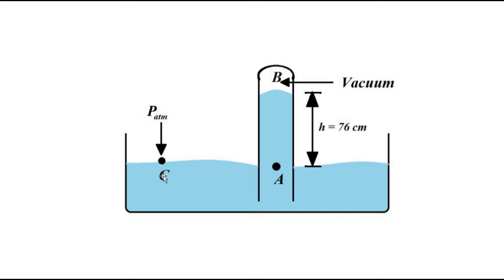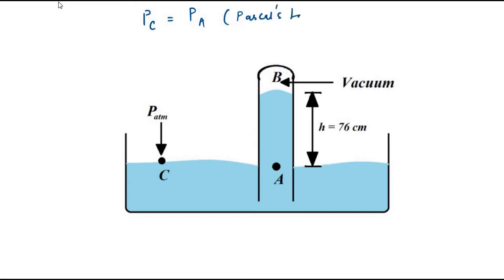We take one specific point C on the container. As per Pascal's principle, the pressure at C is uniformly and equally transmitted to all other points in the container. If we pick point A inside the glass tube, then the pressure at point C equals the pressure at point A, as per Pascal's law — pressure is equally transmitted in a liquid.